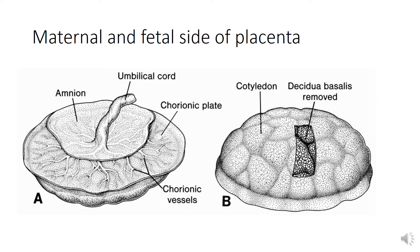The freshly delivered placenta is a discoid organ, about 20 centimeters in diameter and 3 centimeters in thickness. It has two surfaces: a fetal surface and a maternal surface. The fetal surface is covered by amnion and hence appears smooth and shiny, with the umbilical cord attached near its center.